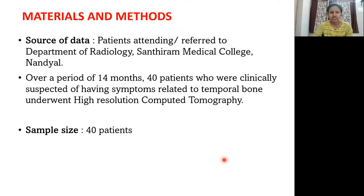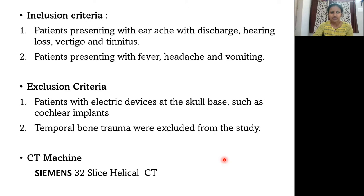Materials and methods: the source of data is patients attending or referred to the Department of Radiology, Shantara Medical College, over a period of 14 months. 40 patients were clinically suspected of having symptoms related to the temporal bone and underwent HRCT. Sample size is 40. Inclusion criteria are patients presenting with earache, discharge, hearing loss, vertigo, tinnitus, fever, headache, and vomiting. Exclusion criteria are patients with electric devices at the skull base such as cochlear implants, and temporal bone trauma. The CT machine used is a 32-slice helical CT.